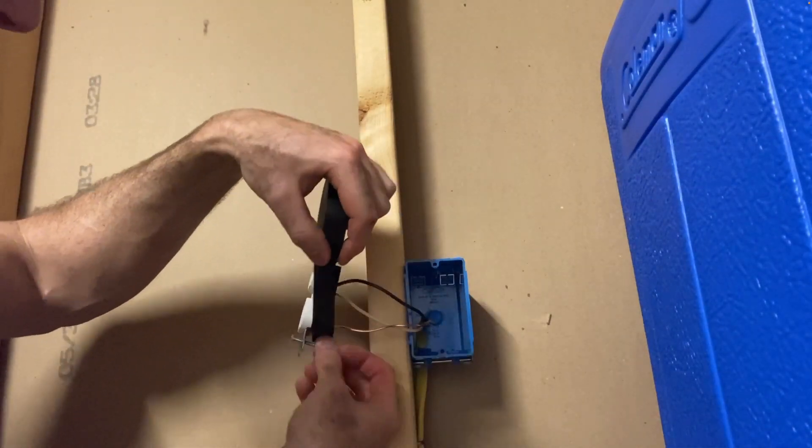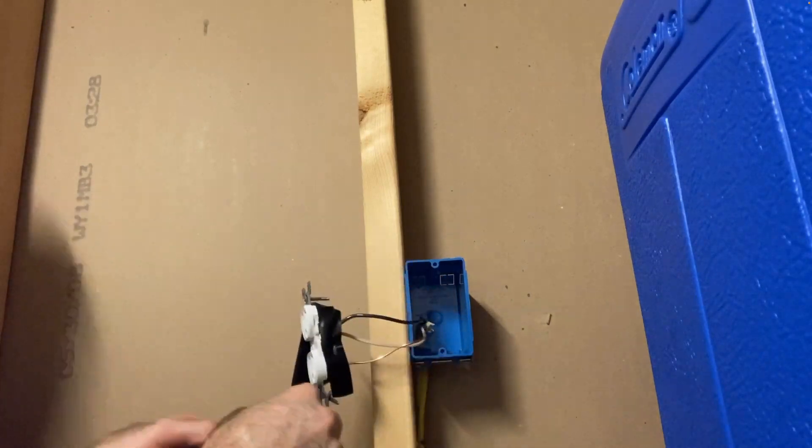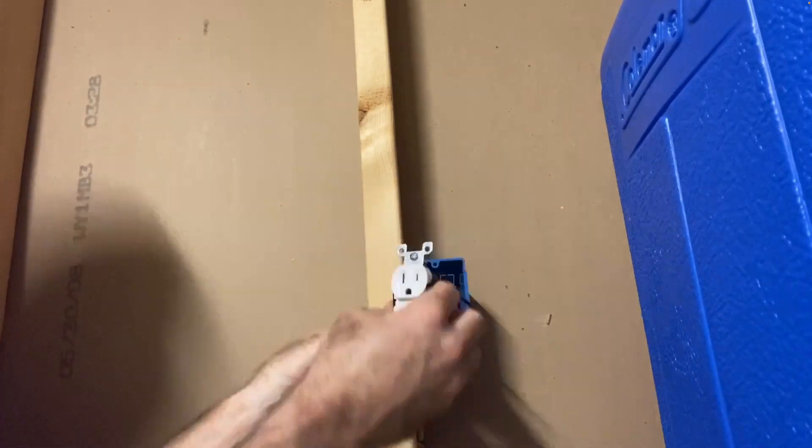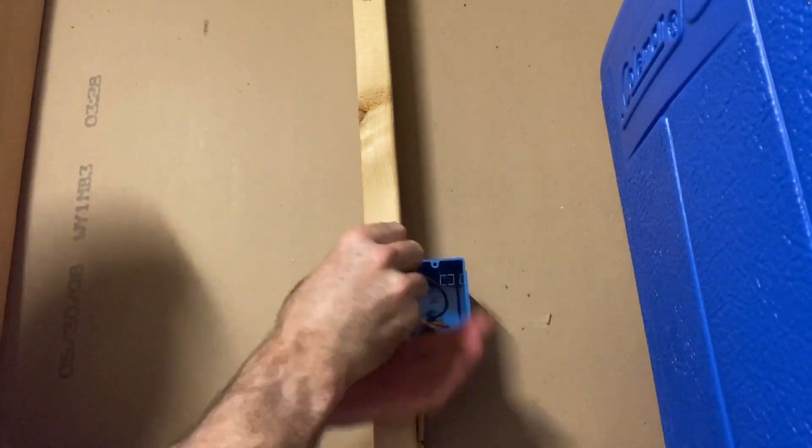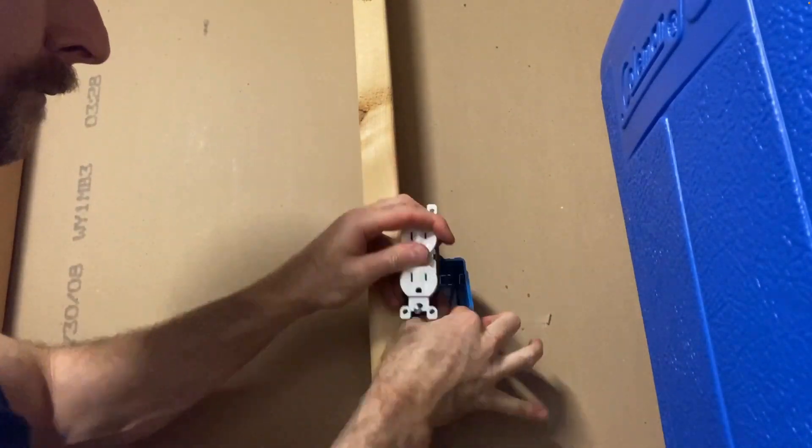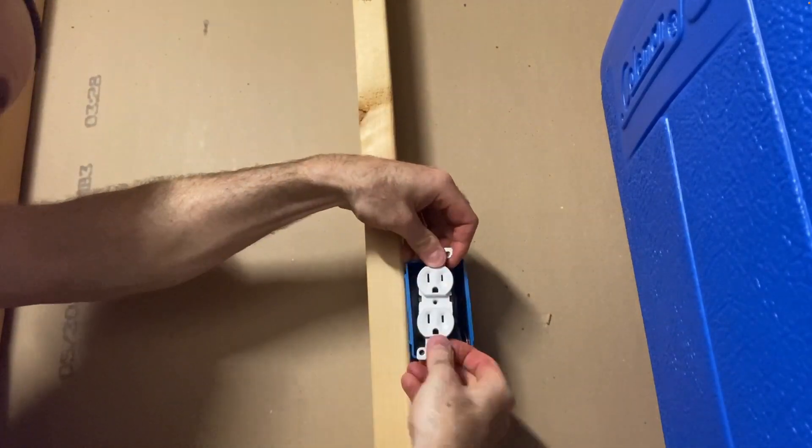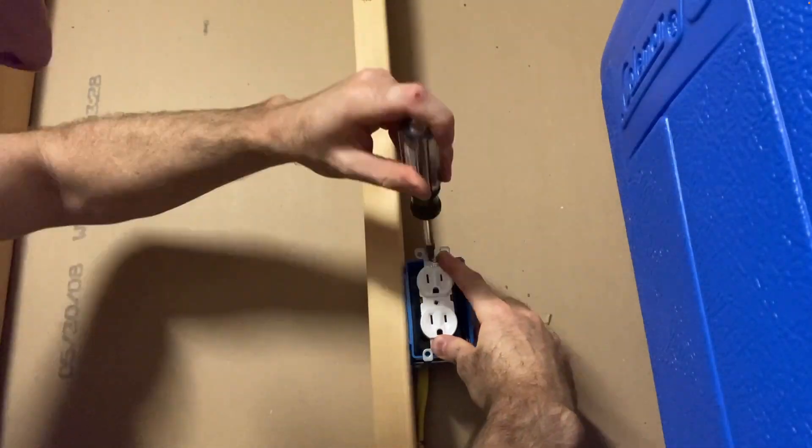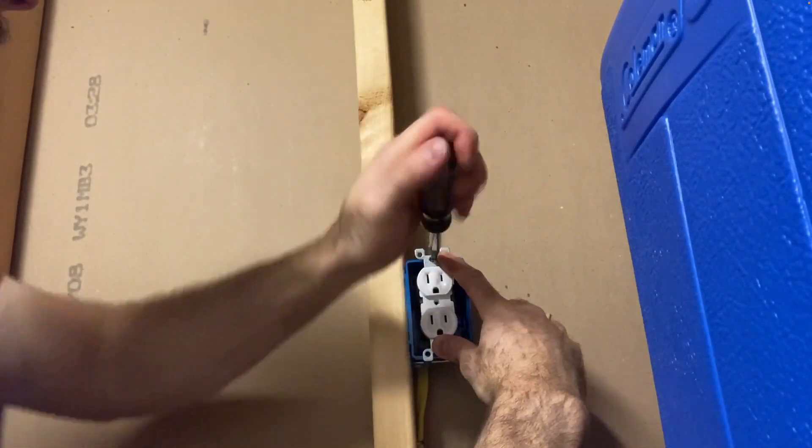It's good best practice to always wrap electrical tape all the way around your screw terminals when you install switches or outlets for safety. Immediately tuck your wires in and attach the new outlet to the new box.